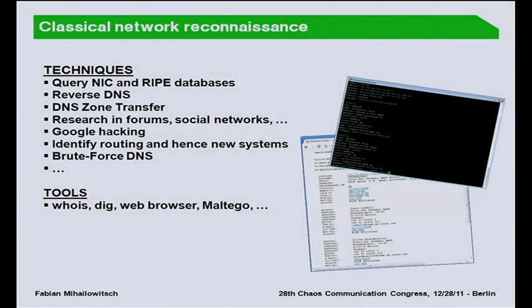What do we have at the moment when it comes to classical network reconnaissance? Basically you have databases like NIC and RIPE databases. If you want to attack a certain company, you can look up IP ranges in those databases, see information on domains and networks. Of course we have reverse DNS — we can try to resolve additional hostnames if we have an IP of the company and hence access some web applications.